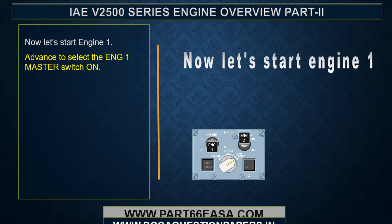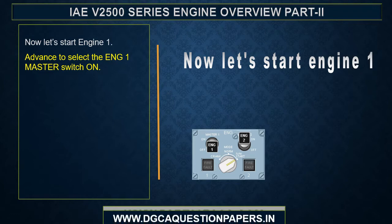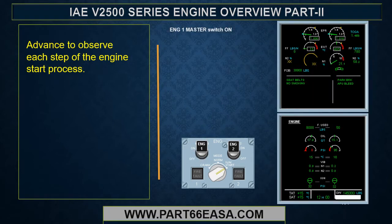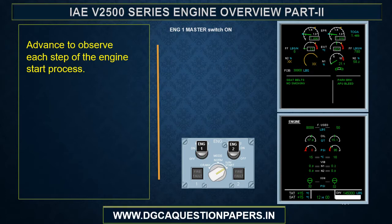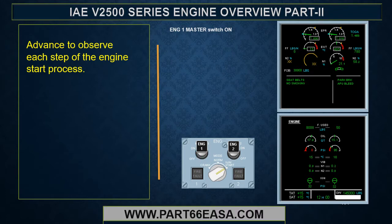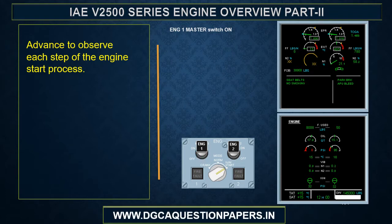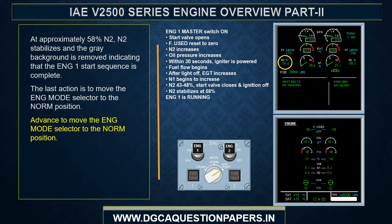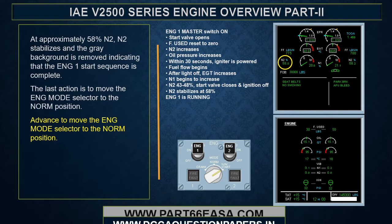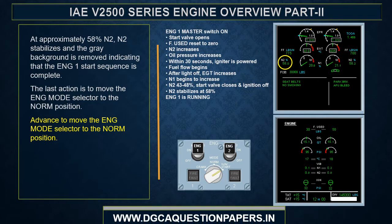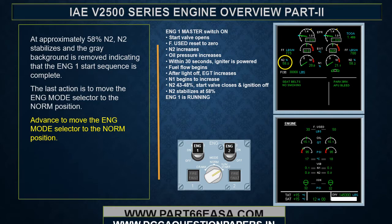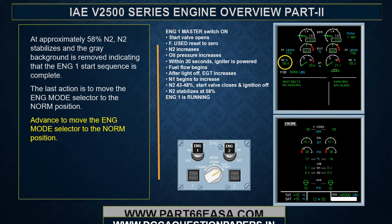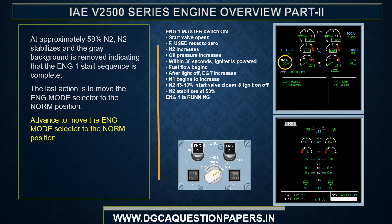Now let's start engine 1. Select engine 1 master switch on and observe each step of the engine start process. At approximately 58% N2, N2 stabilizes and the gray background is removed, indicating that the engine 1 start sequence is complete.